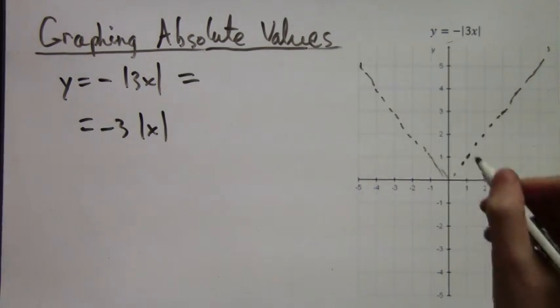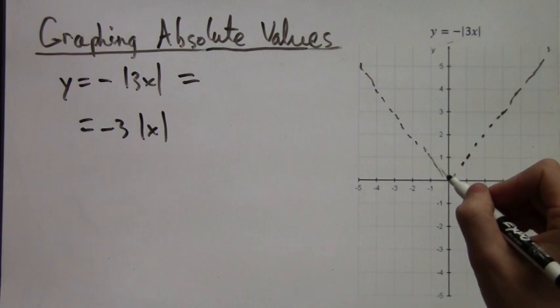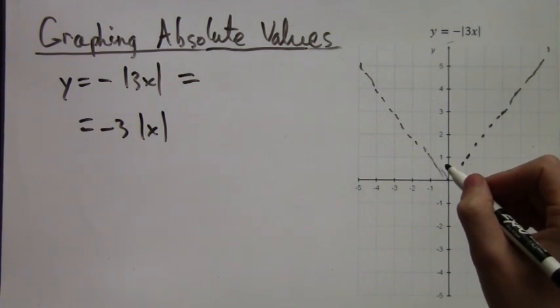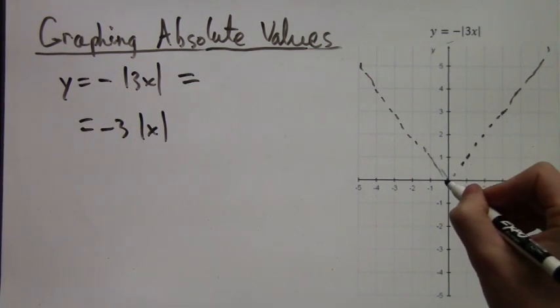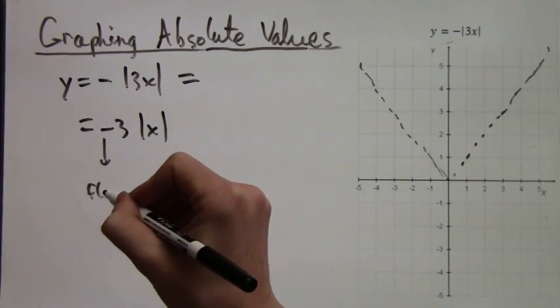So now let's graph |x|. What does multiplying it by negative 3 mean? Well, first of all, since we have the negative sign, we need to flip the graph. And flipping the graph is just, we make a mirror reflection of the whole thing about the x-axis.